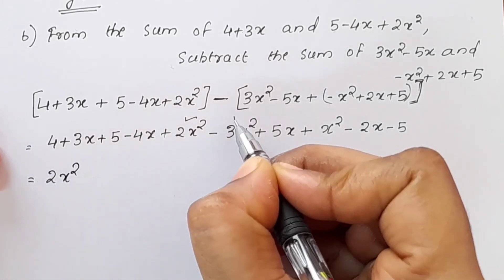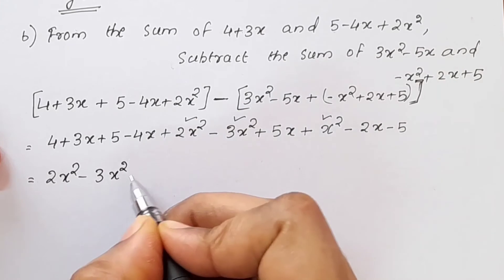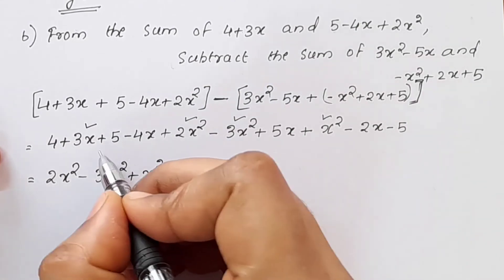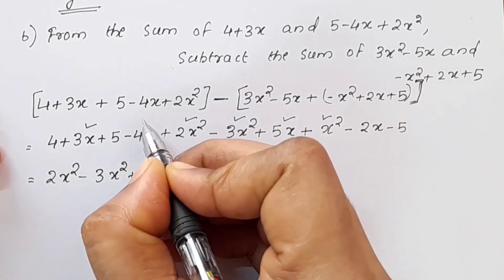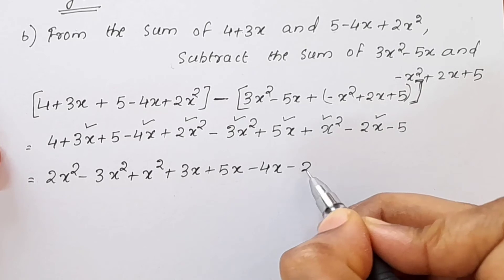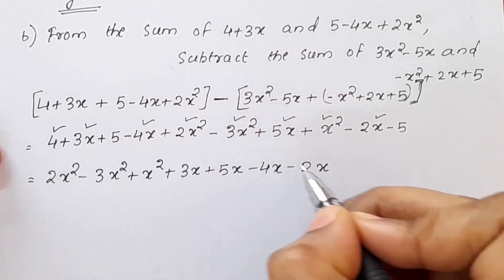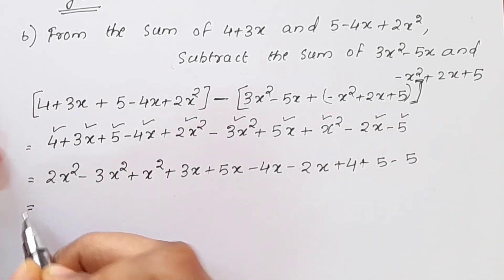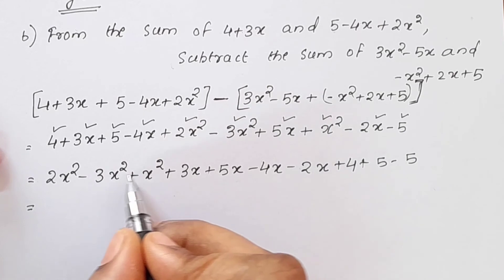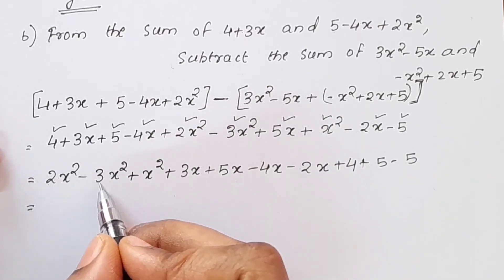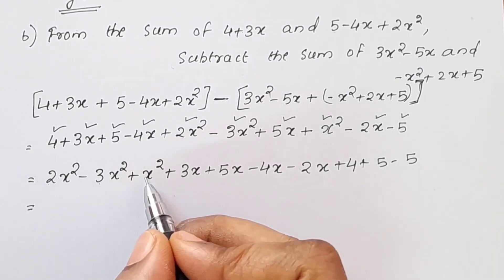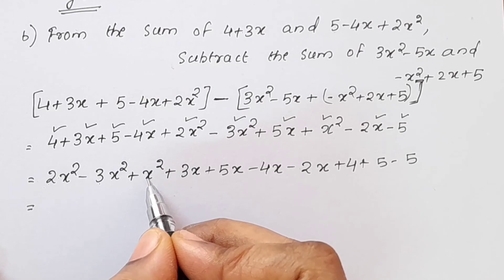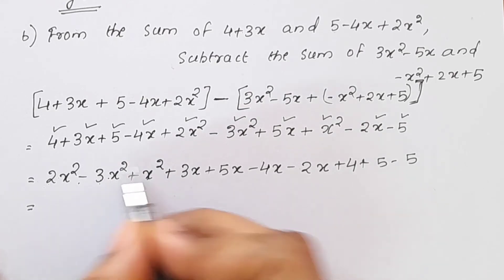2x square minus 3x square plus x square. Now we will rearrange. 2x square minus 3 is minus 1, minus 1 plus 1 is 0.